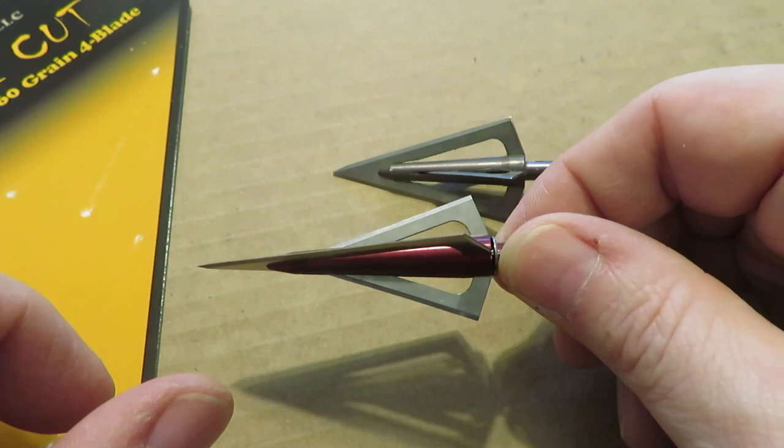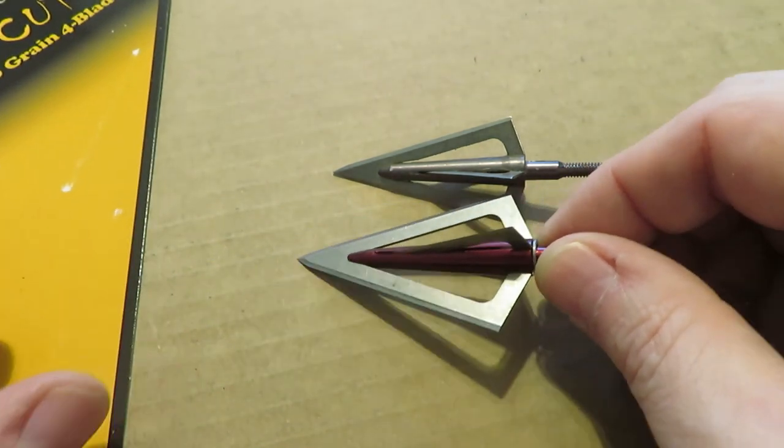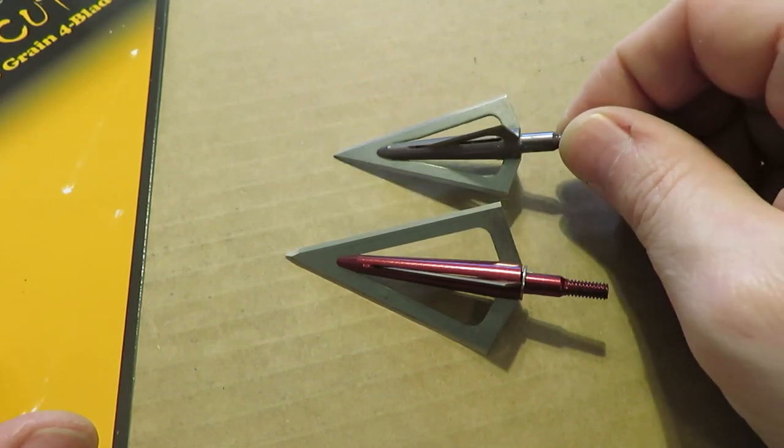But Palmer wanted the head continued in a far larger platform, starting at an inch and a half wide. It's one of the biggest four blade heads on the market at 160 grains. As you can see compared to the Muzzy Phantom, it's considerably larger.